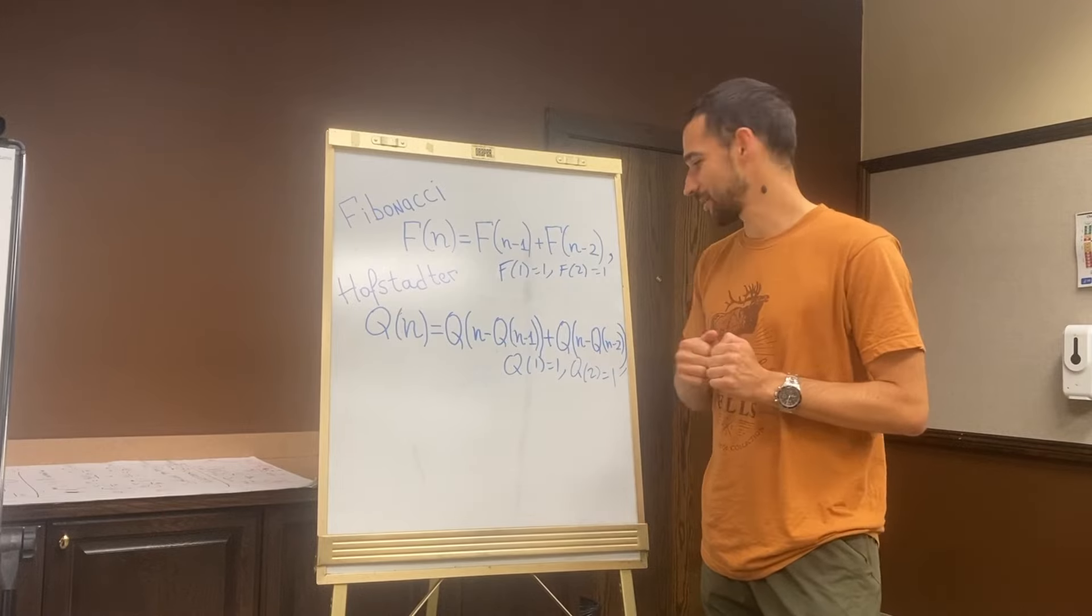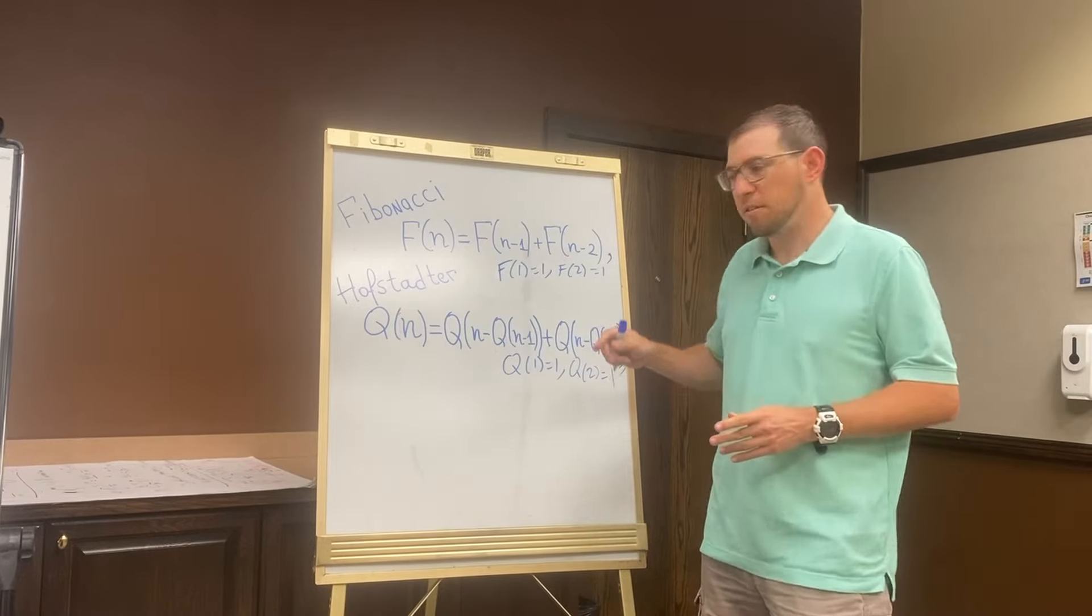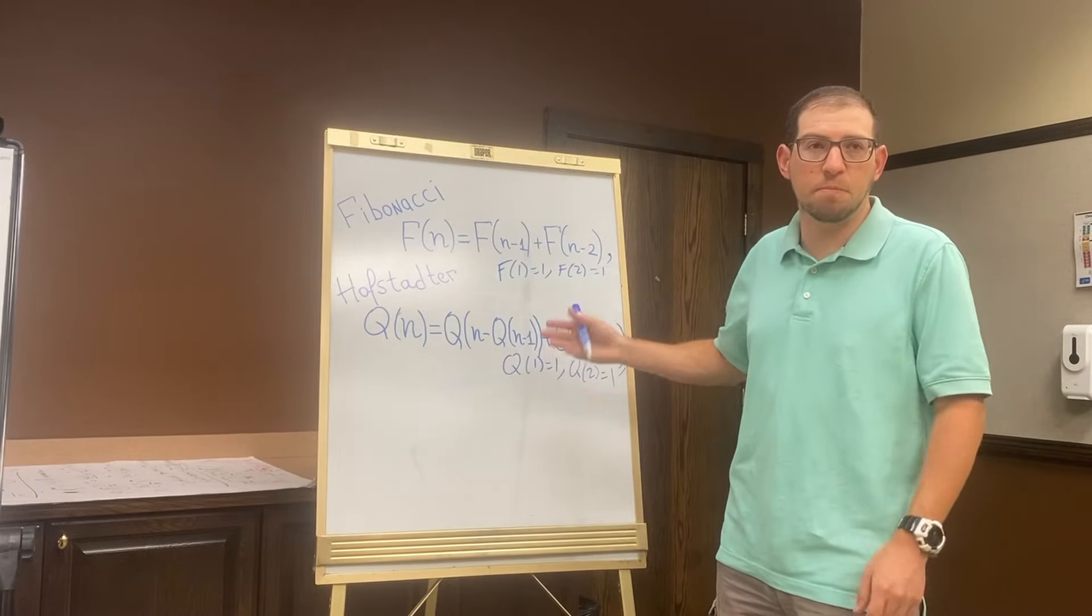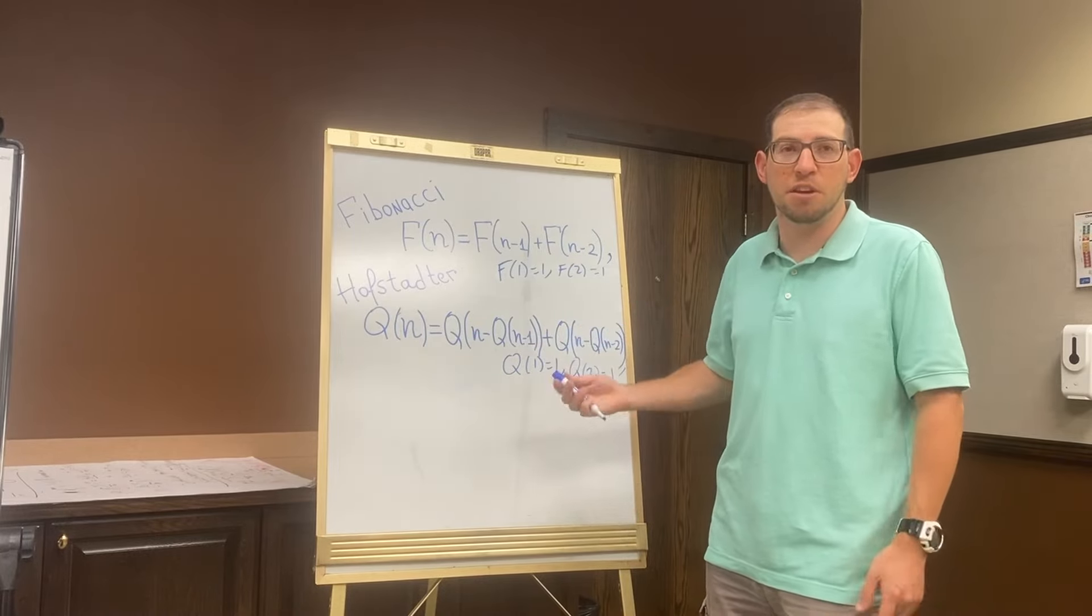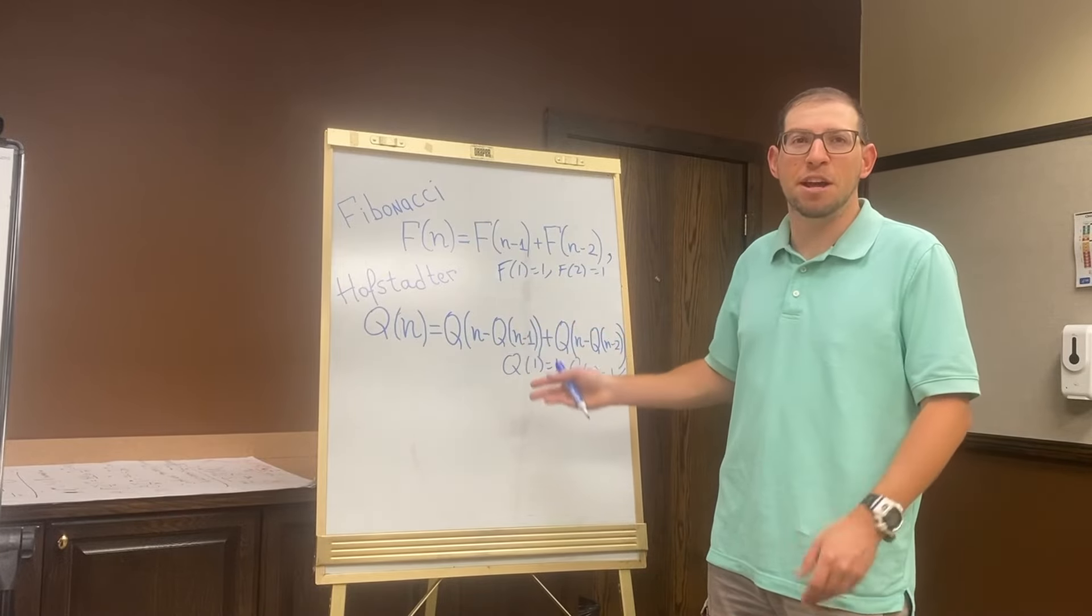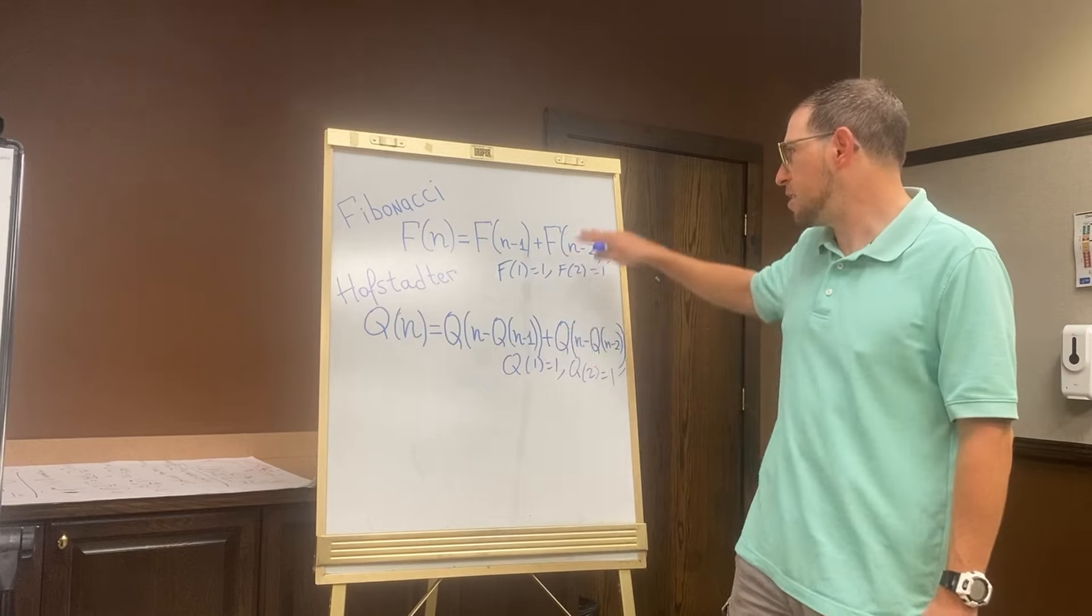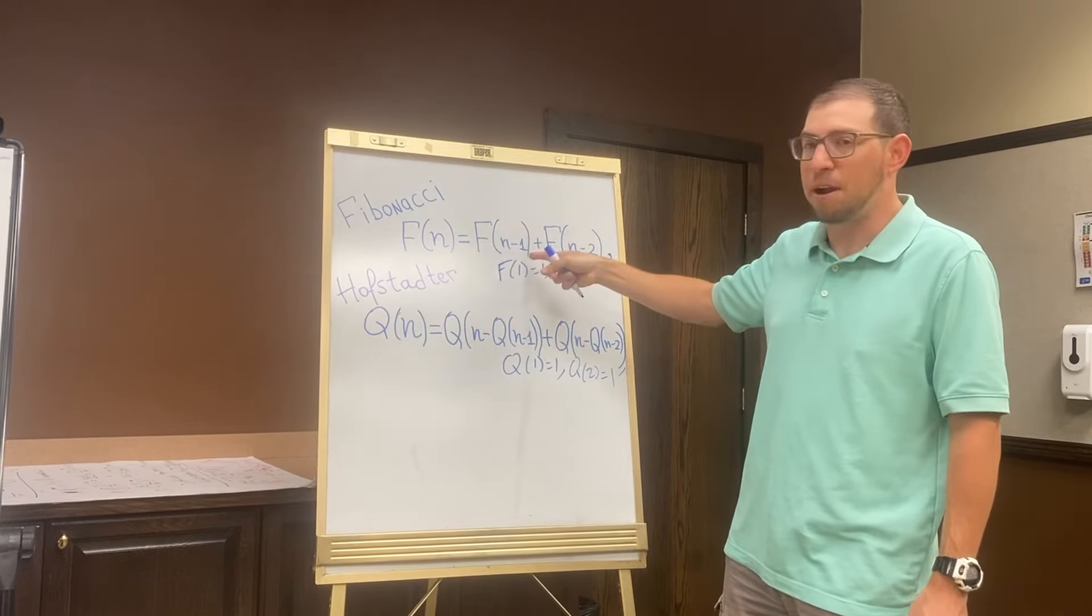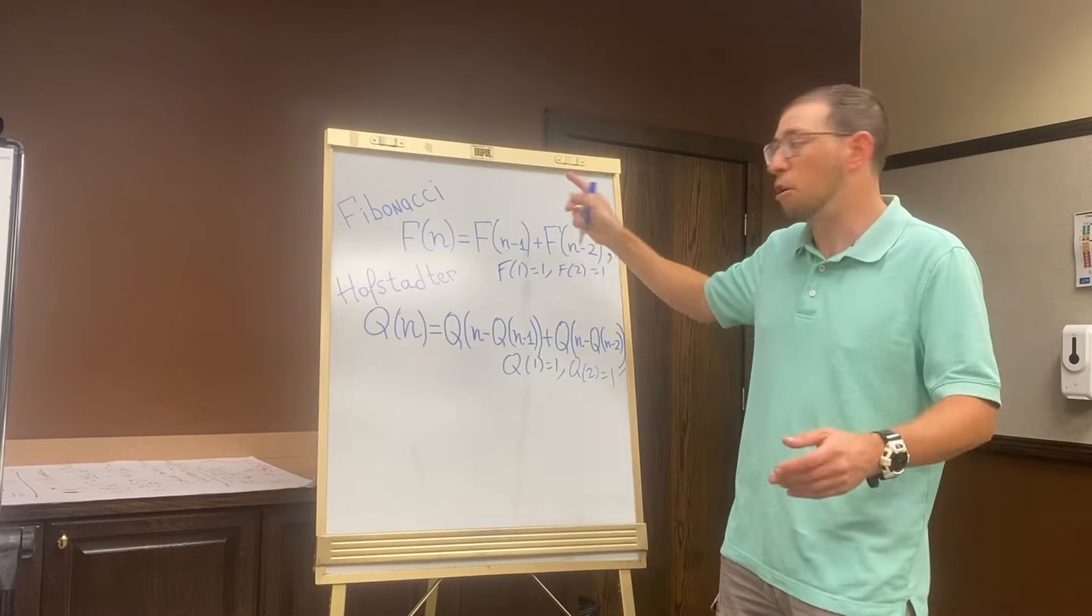The Hofstadter Q sequence first appeared in the classic book Gödel, Escher, Bach by Douglas Hofstadter, and he refers to it there as a meta-Fibonacci sequence. Instead of Fibonacci, where to get the nth term you take the n minus 1st term and the n minus 2nd term, so you go back one and two terms and then add them together.